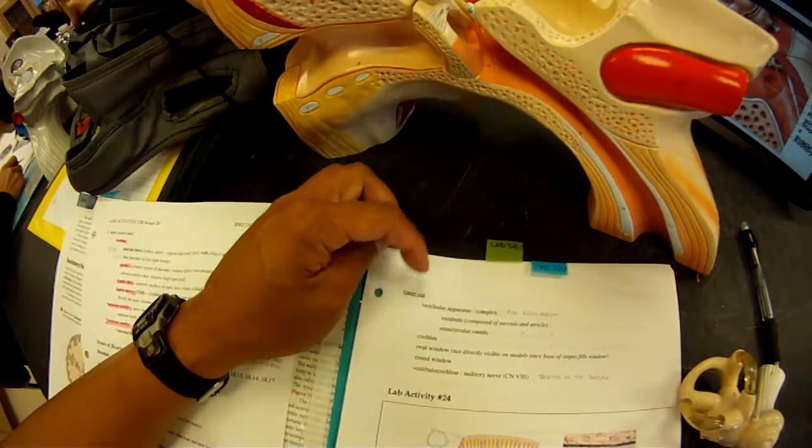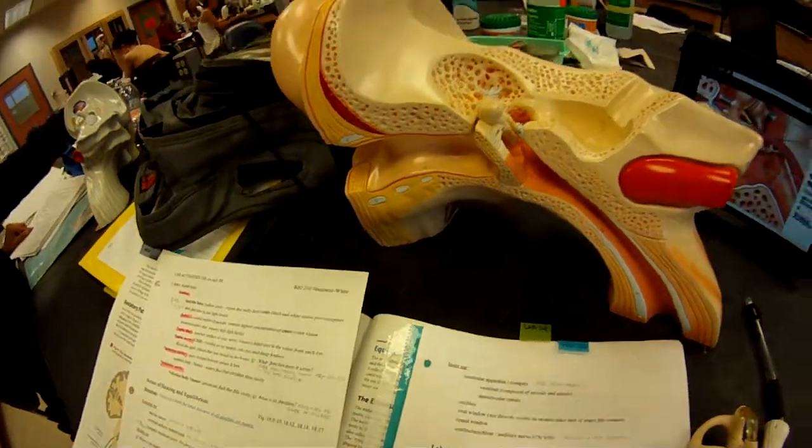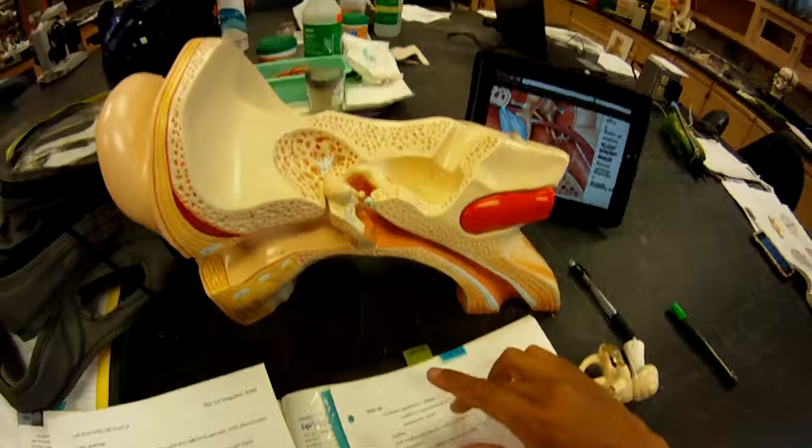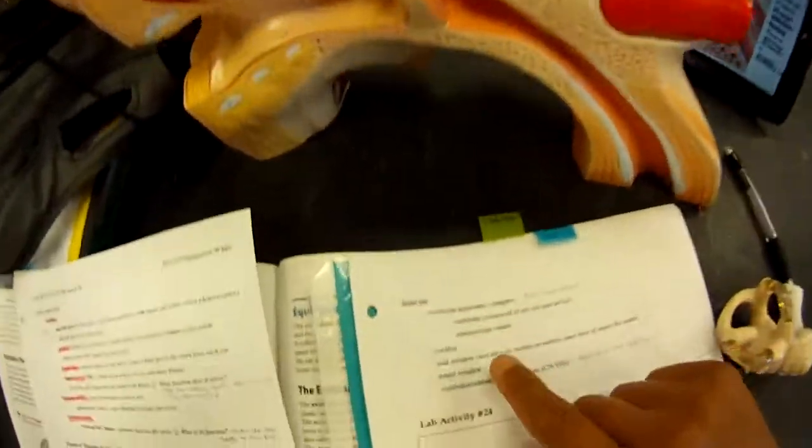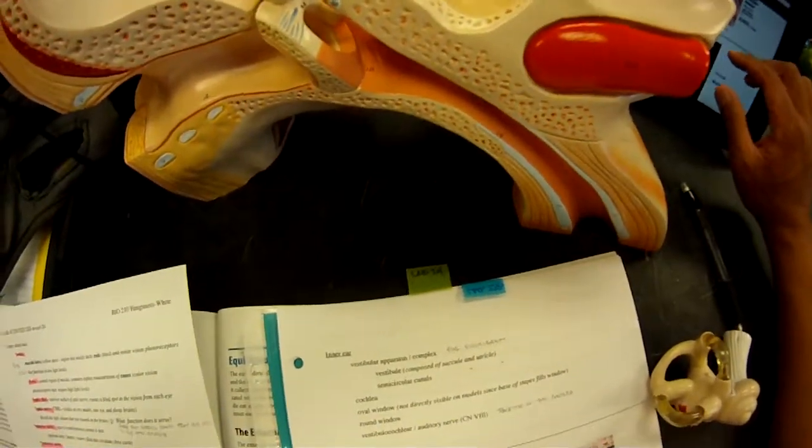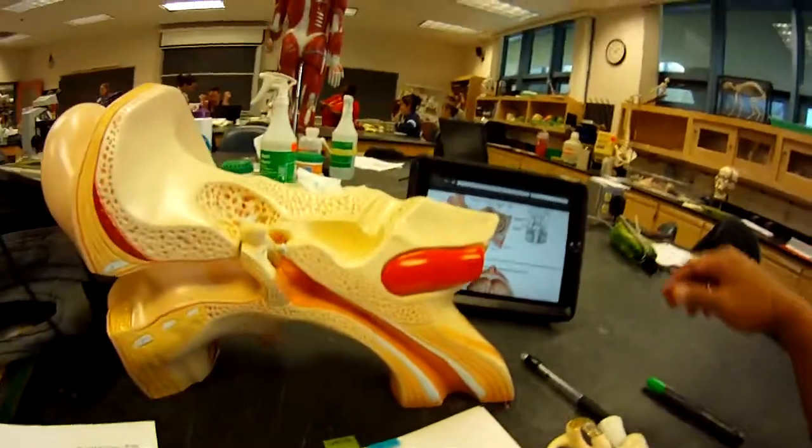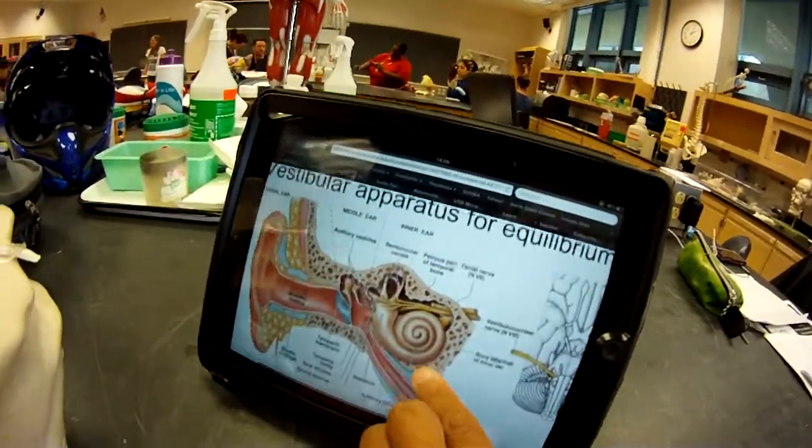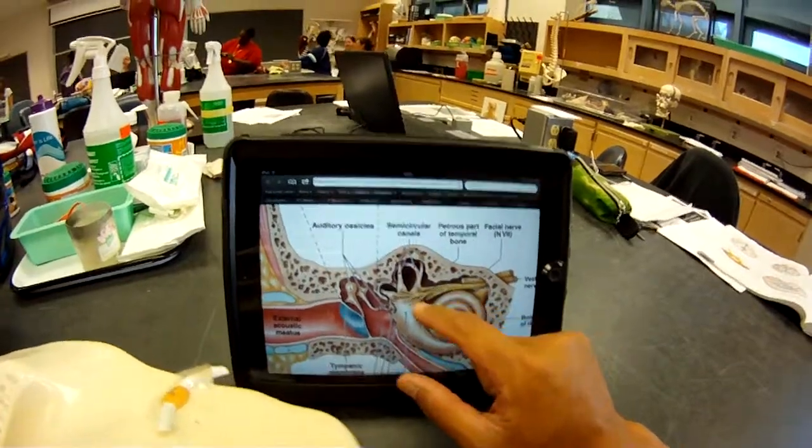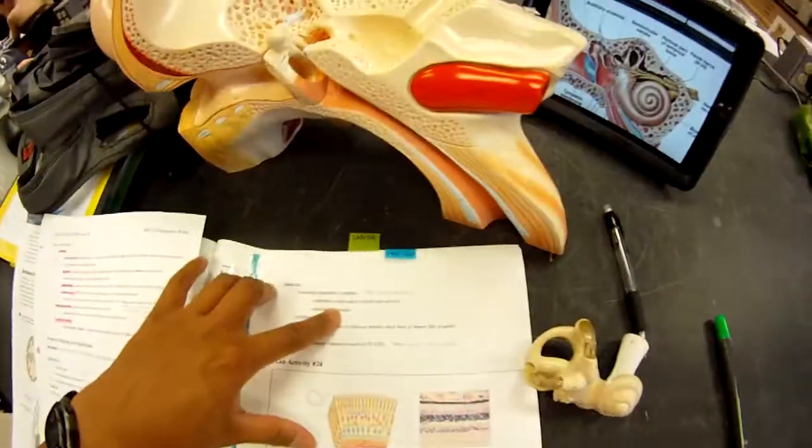The inner ear: the vestibular apparatus slash complex. There's really nowhere to point it out, but it's in the inner ear. The function of this is for equilibrium. The location for the vestibule and semicircular canals are these right here. You won't have it on the model, but this is what it is. The vestibule is composed of the saccule and utricle, but those aren't on the model or in this picture.